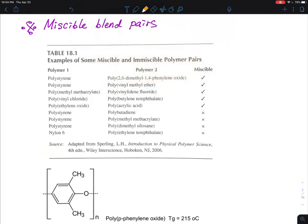So I'm going to highlight those samples that are miscible pairs. Polystyrene and poly(2,6-dimethyl-1,4-phenylene oxide), we call it PPO, and that's probably the one I'm going to elaborate a lot more on. And the other polymer systems are polystyrene and polyvinyl methyl ether, polymethyl methacrylate and polyvinylidene fluoride, polyvinyl chloride and polybutylene terephthalate, and polyethylene oxide and polyacrylic acid. So those are the ones with a check mark, which means they are miscible.